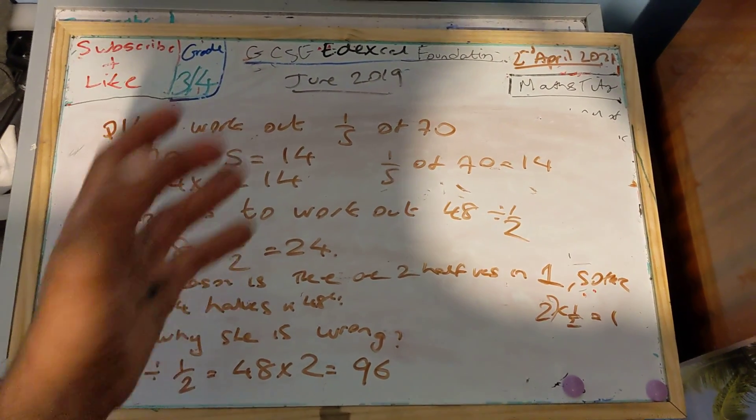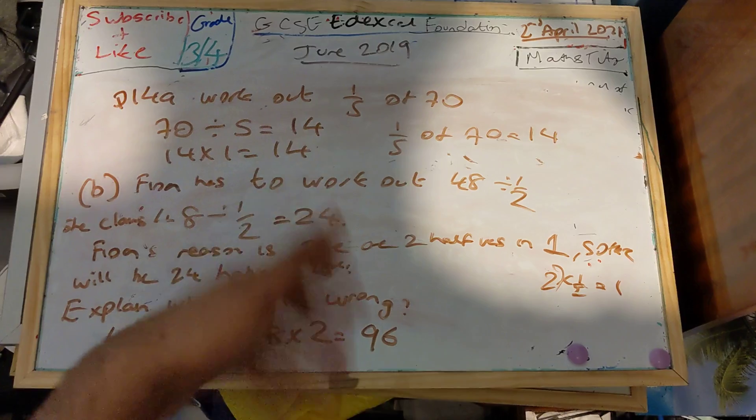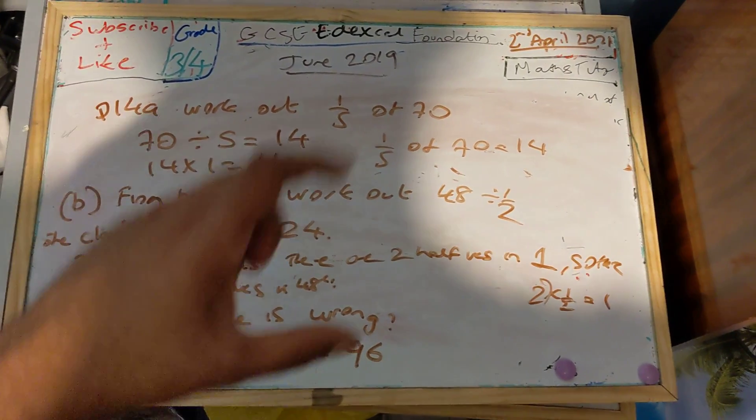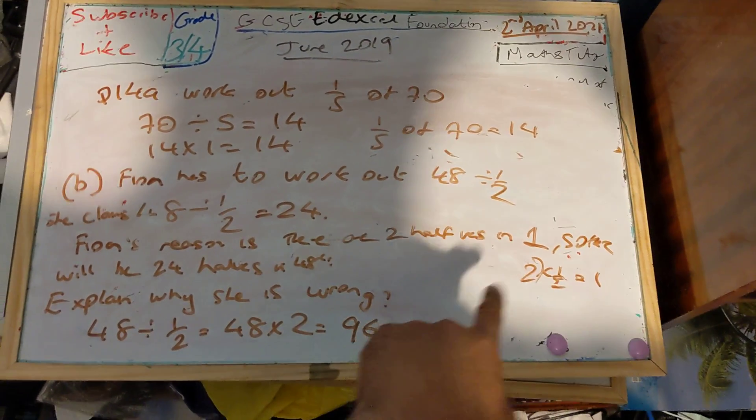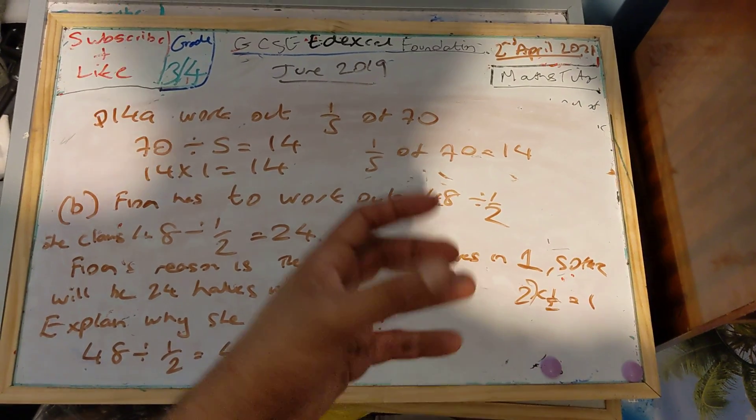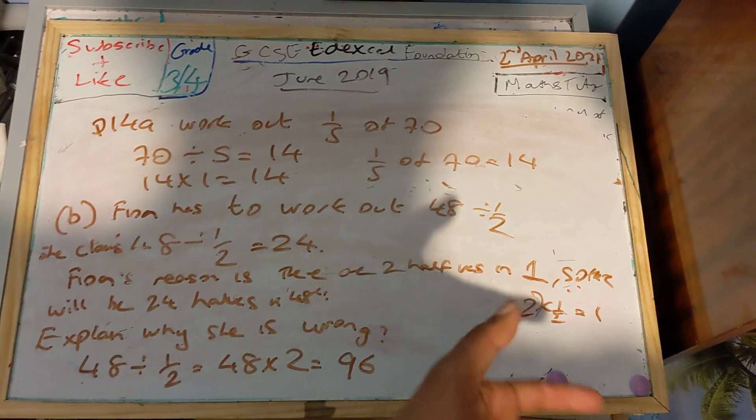So 48 divided by half is 48 times 2 which is 96. There are two halves in one. So 2 times a half is 1, 96 times a half is 48.